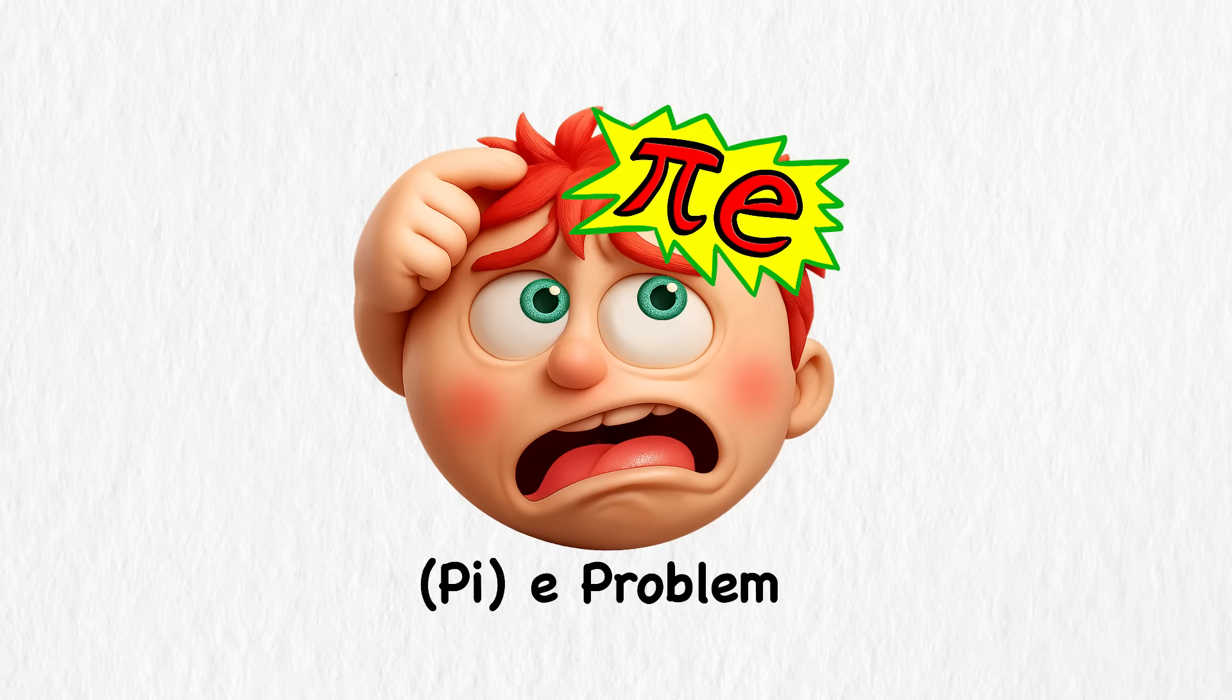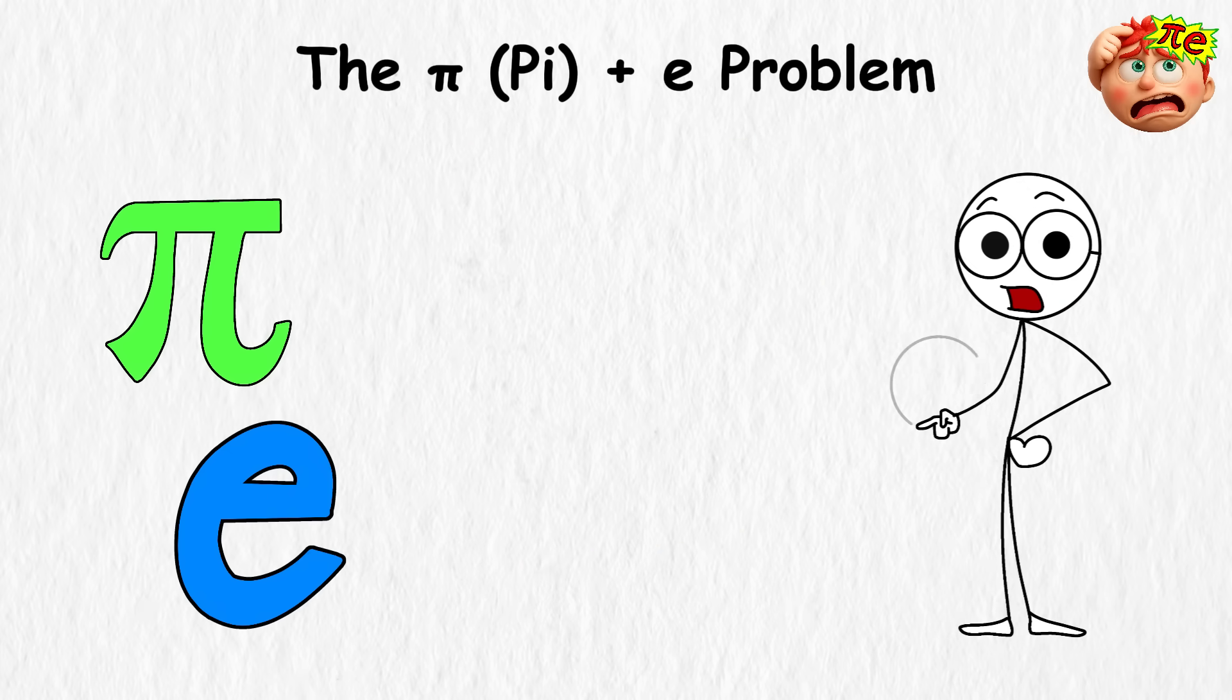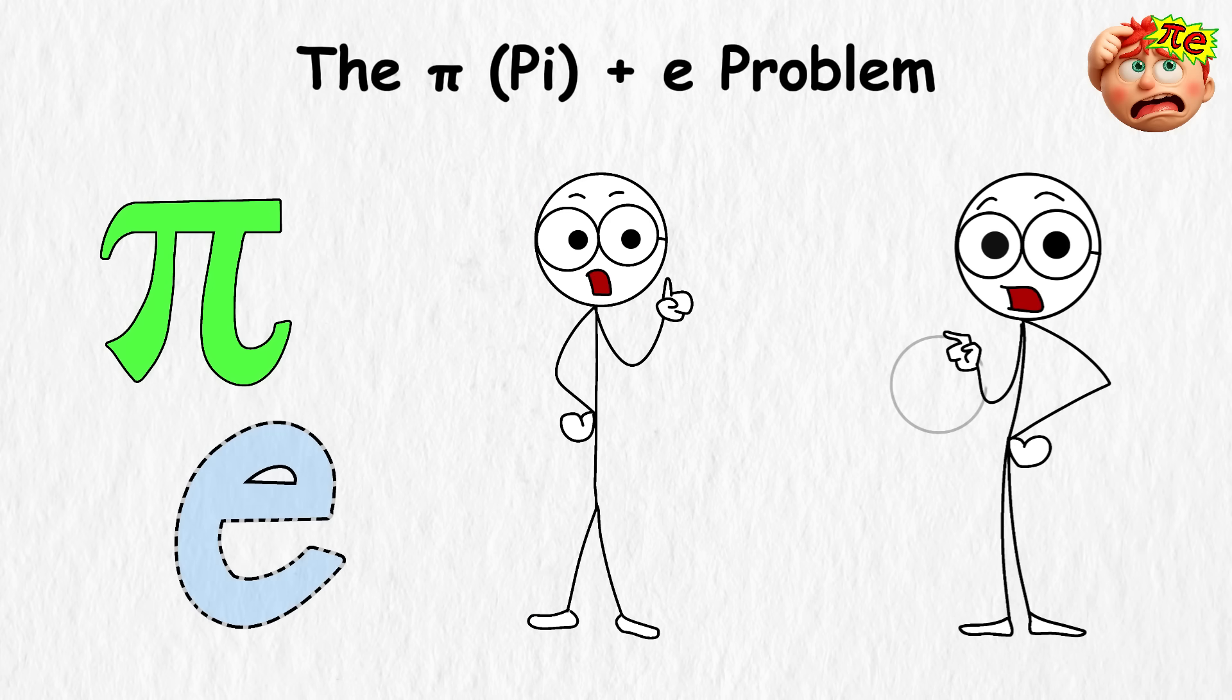The Pi plus E problem. Pi and E are two of the most famous numbers in math. Pi shows up whenever circles are involved. It's basically the ratio of a circle's circumference to its diameter.